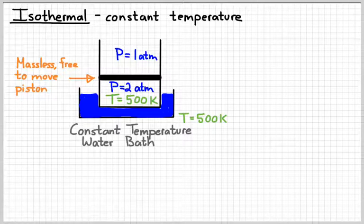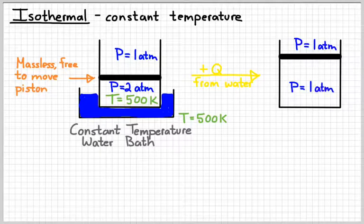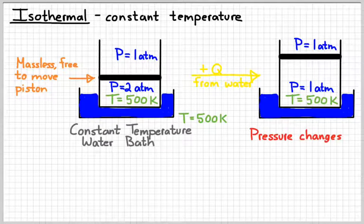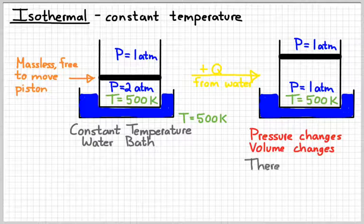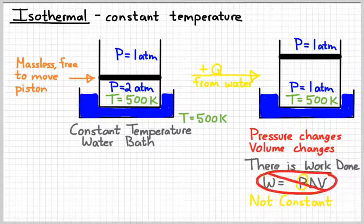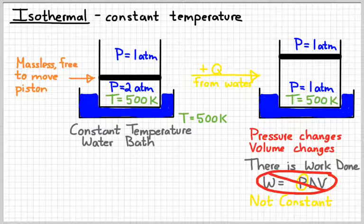Now a couple of things that we sometimes get confused about, just because the temperature is not changing, doesn't mean that heat's not added. Heat's going to be added from the water to keep the temperature constant. And so that piston would go up until it reaches, until the pressures are equal on either side, but the temperature is going to remain constant. So because the pressure changes and the volume changes, there is going to be work done. What we have to realize here is that the equation work equals negative P delta V, because the pressure is not constant, we can't use that equation. And so we either have to know more information about the system, or because these are curved on a PV diagram, use calculus to find the area under the curve.